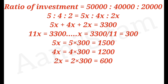The sum is 5 plus 4 plus 2 equals 11. So if we add them, we get 11. Now we have 5x, 4x, 2x as the parts.